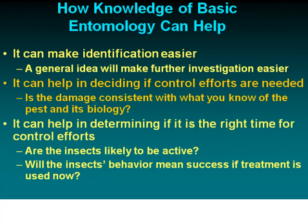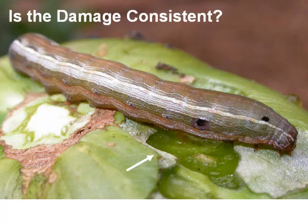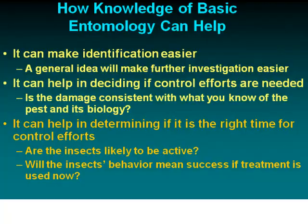Basic entomology can also help in deciding if control efforts are needed. We've talked about having damage consistent with what you know about the pest's biology. Here we have a tomato from my garden with a caterpillar and a large chewed hole. We know caterpillars have chewing mouth parts, and this particular caterpillar was all over the plant, so yes — this insect is capable of doing that kind of damage.